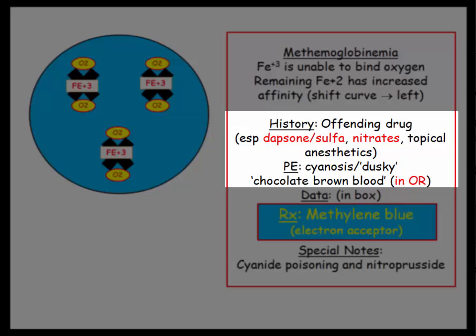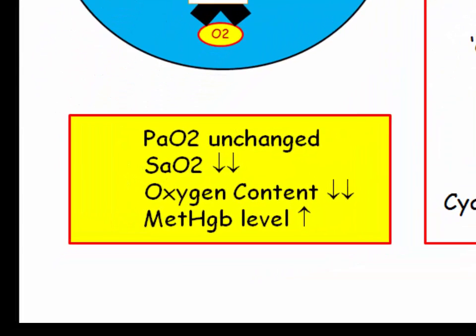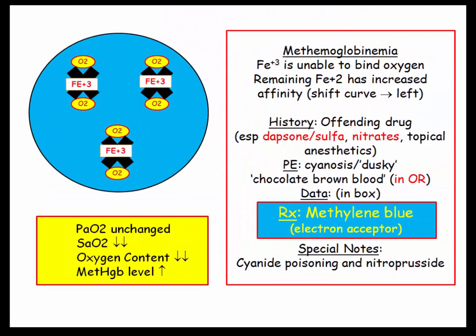Unlike carbon monoxide, these patients are dusky or cyanotic — there is no oxygen binding. The surgeon may describe chocolate brown blood, obviously seen in the operating room. They're going to describe the patient with methemoglobinemia and ask about PaO2, which is unchanged; oxygen saturation, which is decreased; and consequently the oxygen content, which is also decreased. Clinically, we would obtain a methemoglobin level, which would be elevated. Treatment is methylene blue, which reduces iron back to the ferrous state.